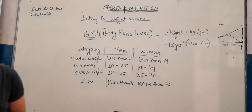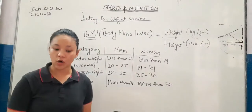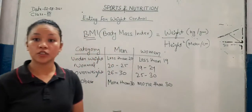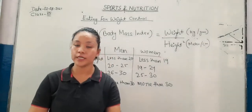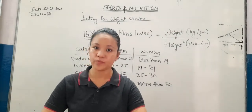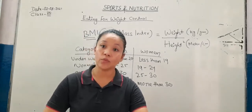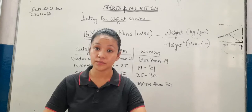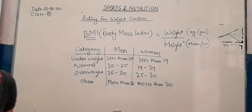This is the formula to find out whether a person is underweight, normal weight, or overweight. There are some tips to control your weight: take a proper balanced diet, and eat more fibrous food — fibers help in digestion, etc.